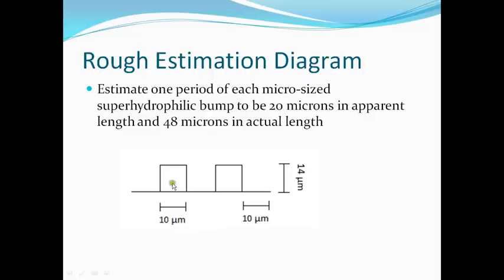We can estimate one period — if you follow the mouse outline, it is 10 microns in the width of the bumps and 14 microns in the height of the bumps. If you sketch it this way, it is 48 microns in actual length and 20 microns in apparent length, which makes it 2.4 times greater than the actual size.